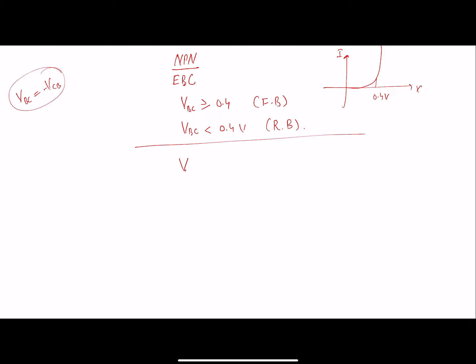Alternatively, I can write these equations as: if I will apply a collector-to-base voltage that is less than minus 0.4 volts, this means that my junction will be forward biased. And if I will apply a collector-to-base voltage that is greater than minus 0.4 volts, this means that my junction is reverse biased.